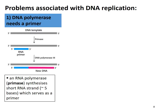However, there are two problems associated with the synthesis of DNA. First of all, DNA polymerase needs a primer to function, and that problem is solved by having another enzyme, which is RNA polymerase, better known as primase. What it does is to synthesize a small stretch of RNA primer that is complementary to the DNA sequence.